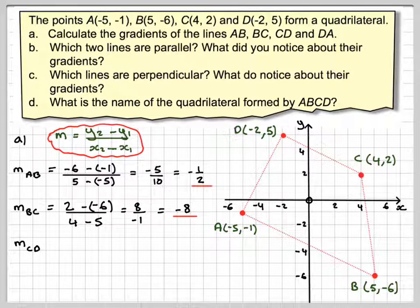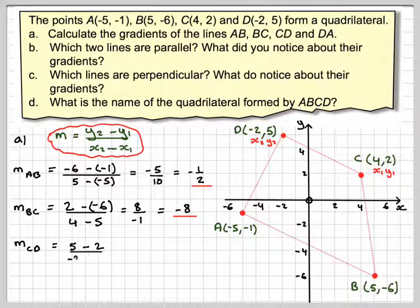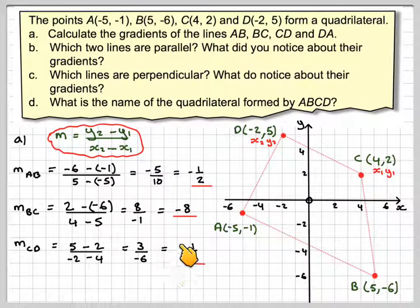Gradient of CD, again relabeling. x₂, y₂, x₁, y₂. So we're going to have (5 - 2), so make sure you select the right coordinate, over (-2 - 4). And that's going to give me 3 for the top, and -2 minus 4 gives me -6. So that gives me -1/2.